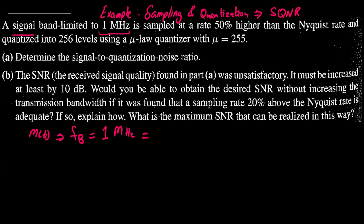Now as per the Nyquist criteria, the sampling frequency Fs must be greater than or equal to two times Fb, which indicates that the sampling frequency based on the Nyquist criteria has to be greater than or equal to two megahertz.